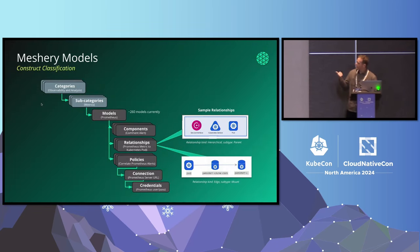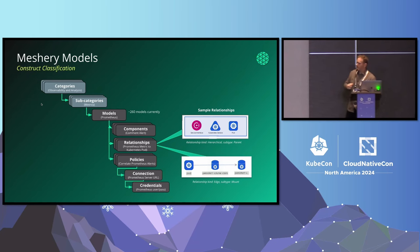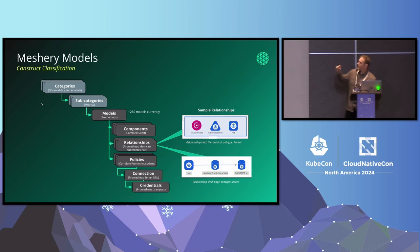Meshery helps you characterize your infrastructure in a very specific, very detailed way. The better the CRD — the better the Kubernetes custom resource definition — the more detail in which Meshery can model that infrastructure. So every night, Meshery as a project goes out and digests from a couple of hundred repos and from Artifact Hub all the CRDs it can find, pulls them in, and puts them into individual models.